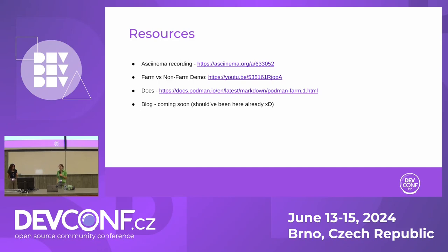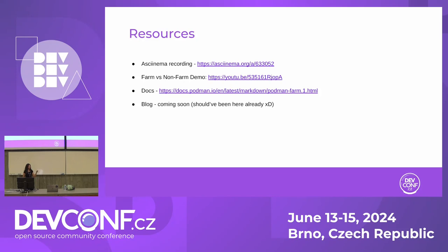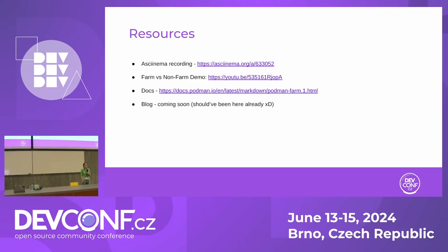Another benefit of using Podman farm build is that your local system's resources aren't being consumed by the build process. Are there any integrations that make setting up Podman Farm easier? As of now, no, but we're welcoming issues and requests. Setting up the system connection is a pain, but so is setting up Podman manifest create manually. Once you set up your farm nodes, you don't have to do it again.